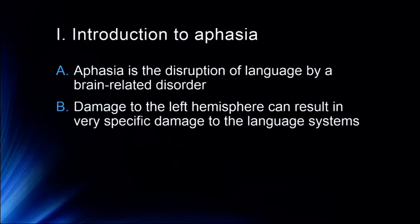We're going to talk primarily about different types of language disorders, particularly what we call aphasia. Aphasia is the disruption of language by some sort of brain-related disorder, primarily hemorrhagic stroke. There are a number of arteries in the left hemisphere that have the potential to be disrupted by stroke or other cerebrovascular incident, and this tends to be how language gets disrupted. It can be very specific to different language systems, which can tell us a lot about the different parts of the brain and how they're responsible for language.